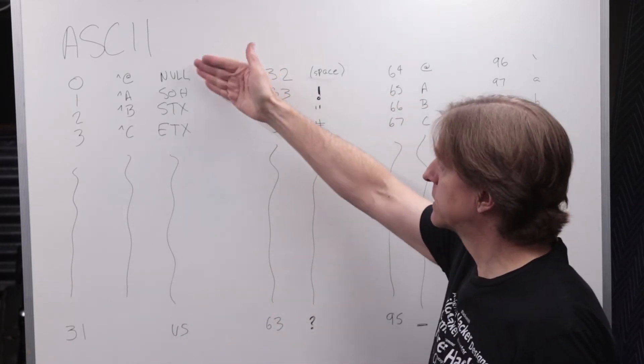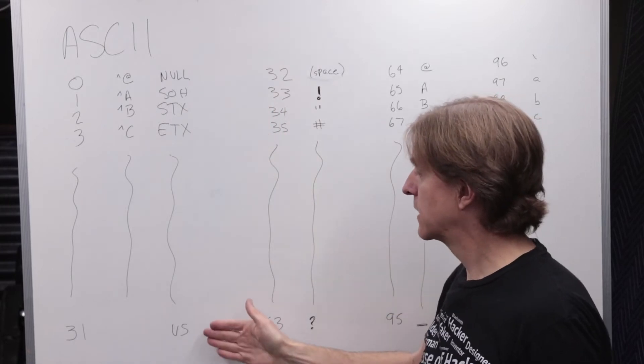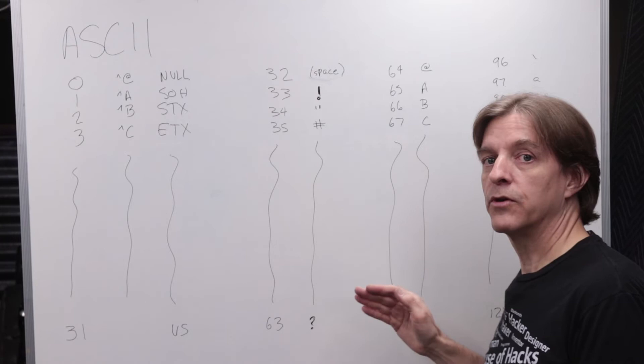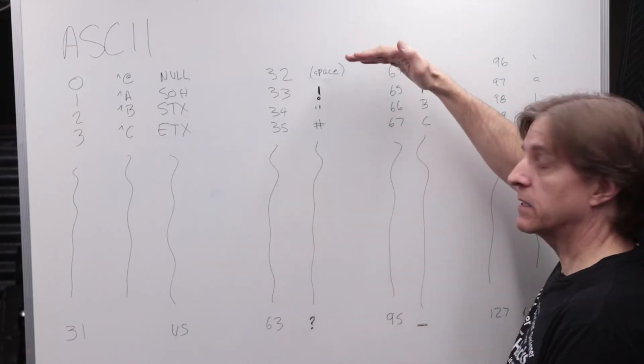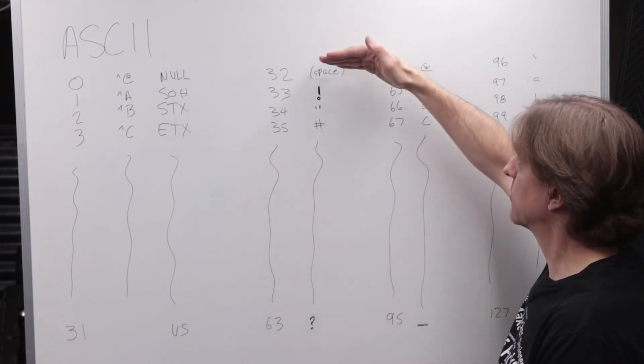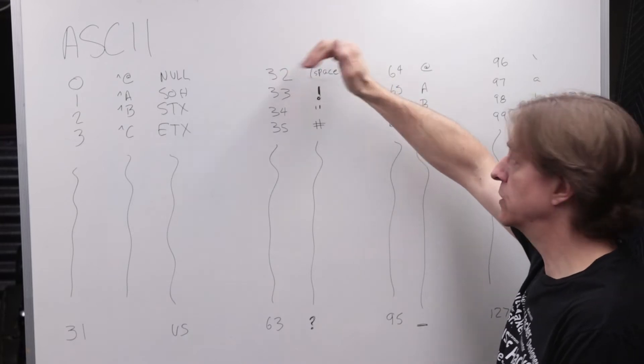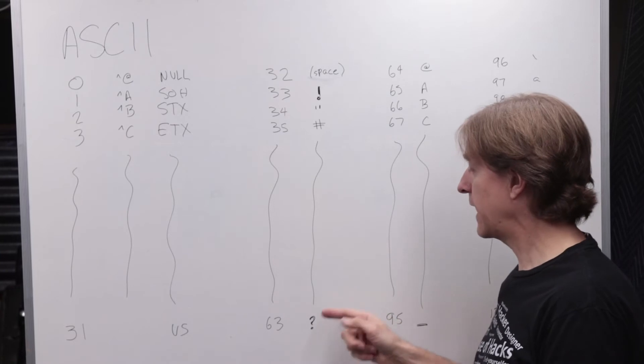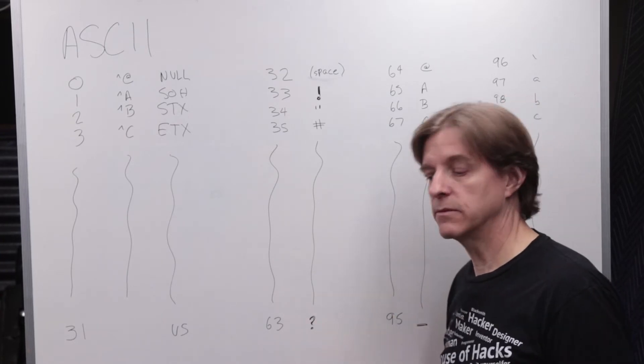They start out with 0 as null and continue down to 31 for special characters. The next group of 32 was for special characters and numbers. It started with space being defined as 32, exclamation point, quote, hashtag. The numbers were in the middle here and at the end at 63 was a question mark.